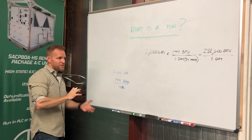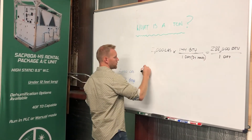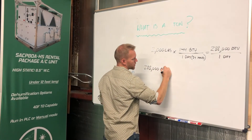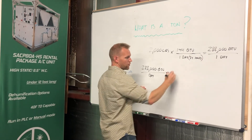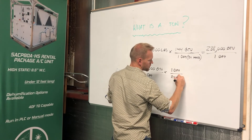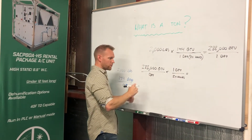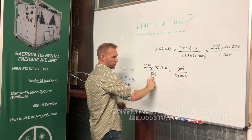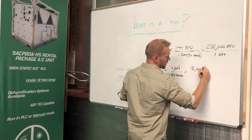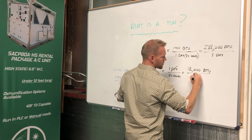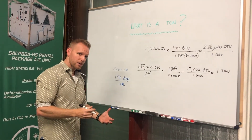So how does that equate to the capacity required on a per-hour basis, which is normally how we represent tonnage in air conditioning systems? That's also pretty straightforward. We know we have 288,000 British thermal units per day — that's one ton — and we know there are 24 hours in one day. So we do a standard conversion: divide 288,000 by 24 hours, and we get 12,000 British thermal units per hour is equal to one ton. That's where the standard came from and how it was developed.